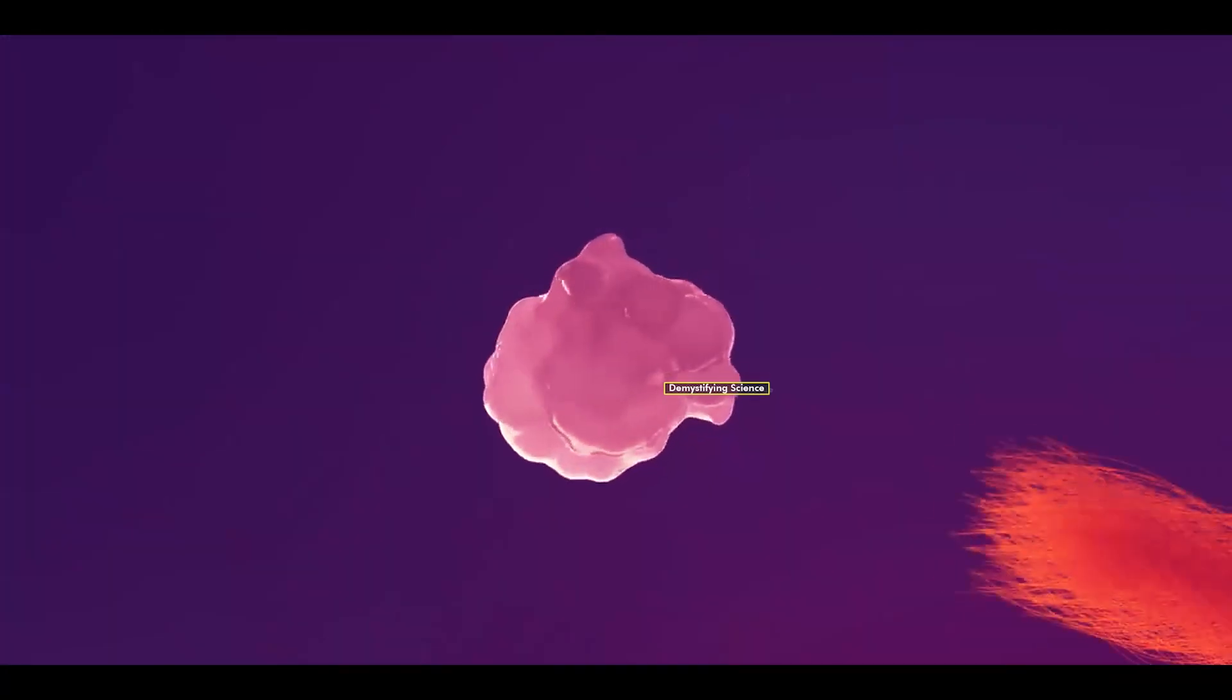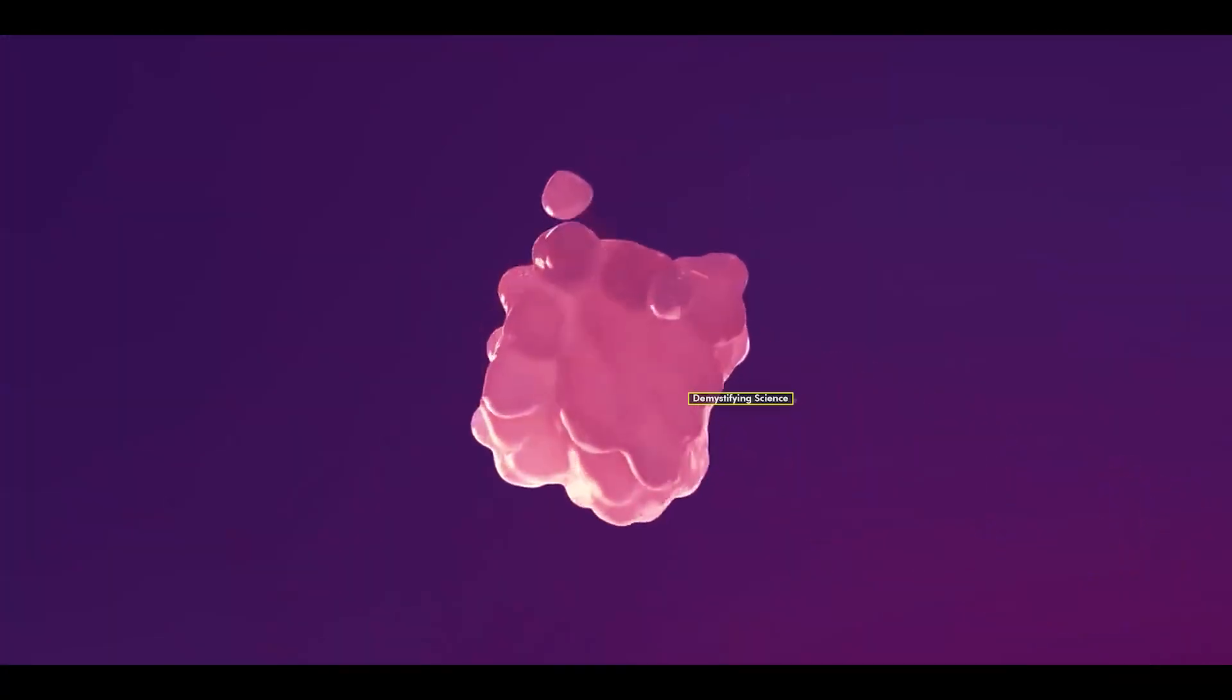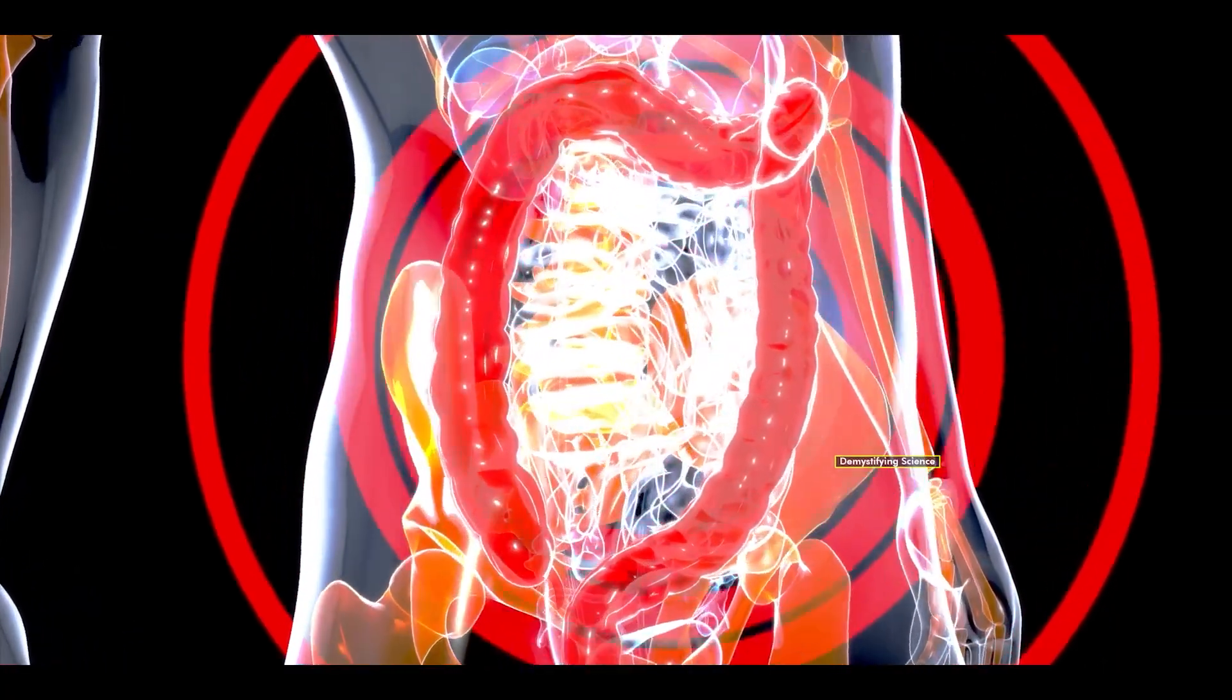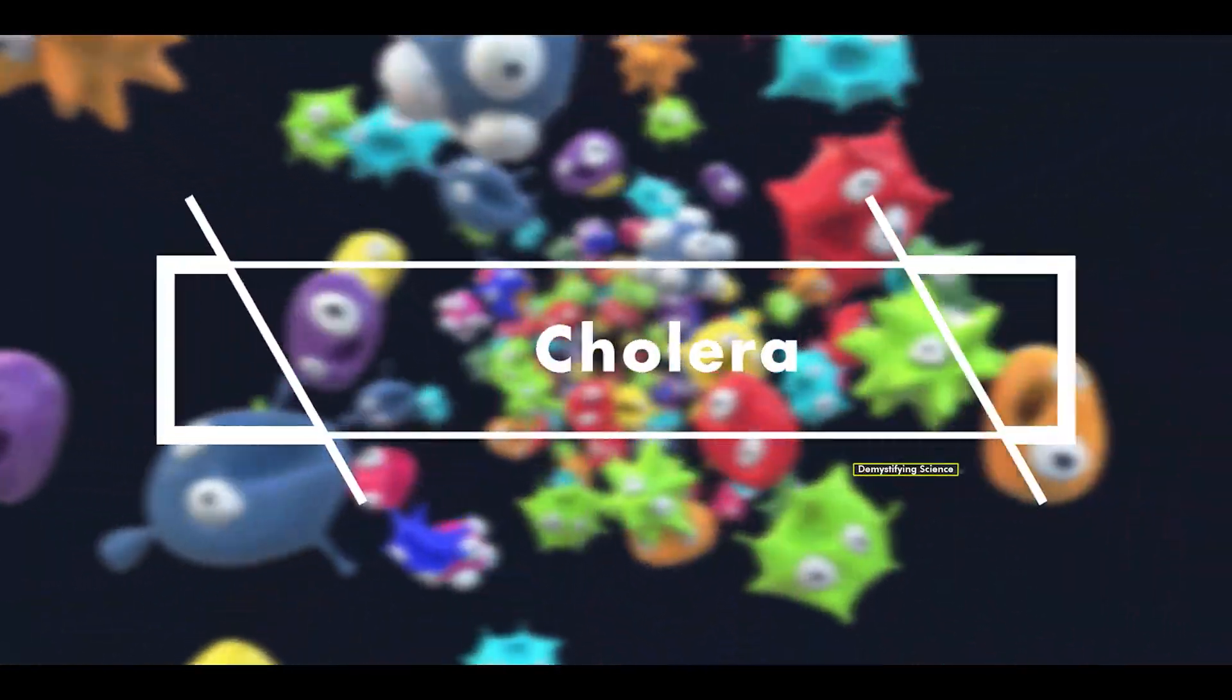These toxins attach to the intestinal cells, disrupting the production of enzymes that control fluid and electrolyte movement. This leads to a significant release of fluids and electrolytes into the intestine, which are expelled from the body instead of being absorbed into the bloodstream, a condition known as cholera.